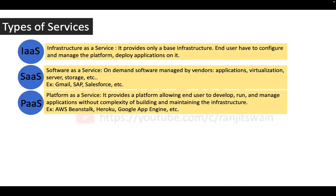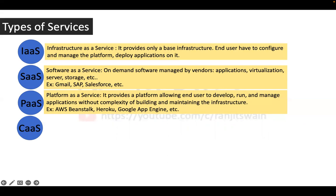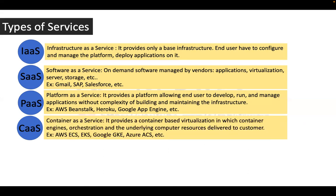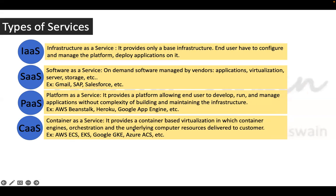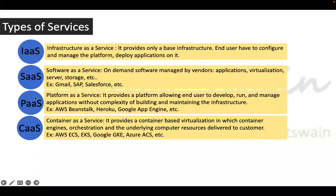These are the three main types of services provided by all service providers. There are a few others. CaaS — Container as a Service — which provides container-based virtualization. We'll learn about containers in the DevOps class. Just note the name for now. The main three to remember are IaaS, SaaS, and PaaS.